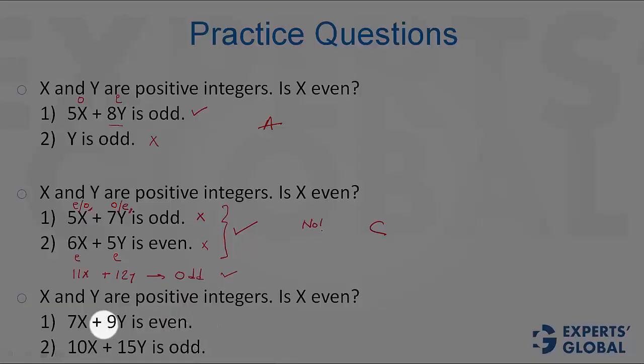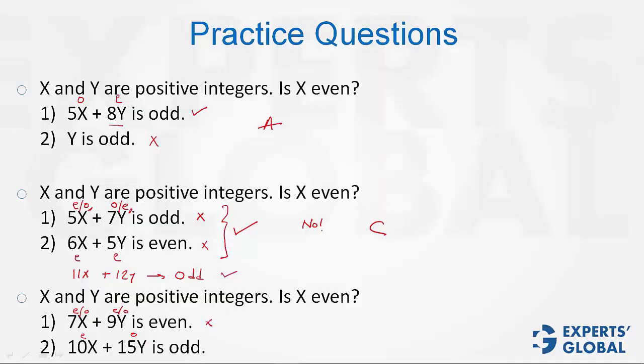Look at the last one here. 7X plus 9Y is even, and therefore either both are even or both are odd. 10X is bound to be even. The sum is odd, and therefore Y must be odd. So 1 did not work. 2 did not work, because 10X would be even, irrespective of whether X is even or odd. On combining, what do we get?